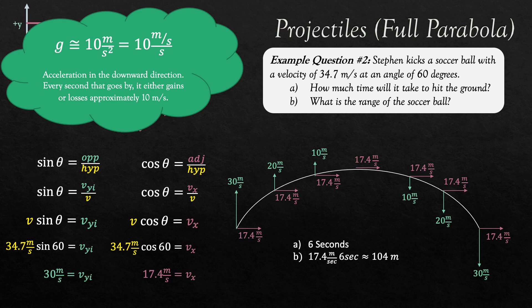So I've answered both questions actually because part A is six seconds because I know it takes three seconds for it to get to its top. I double that number and that's how much time it takes to get to the ground. And as far as how far it goes, the range, well, I'm going to multiply its horizontal velocity by six seconds to get 104 meters.